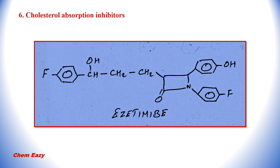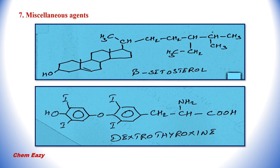This is the structure of ezetimibe, coming under the category of cholesterol absorption inhibitors. Under the last category, miscellaneous agents, this is the structure of beta-sitosterol and this one is dextrothyroxine.